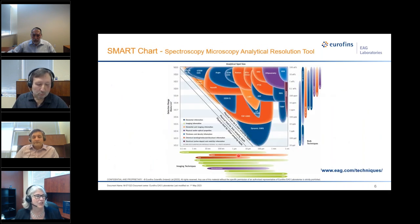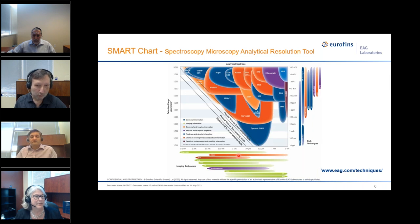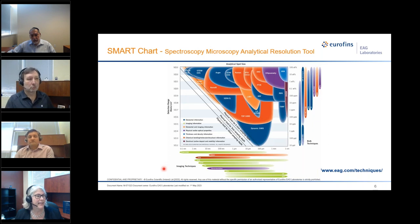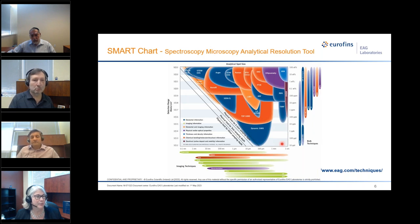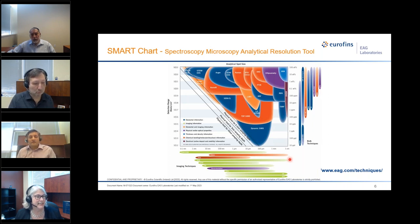SMART is an acronym for Spectroscopy-Microscopy-Analytical Resolution Tool, and it shows the techniques we have at EAG. This chart allows us to compare spot size and detection limit for each technique. The techniques are color-coded: dark blue areas provide elemental information primarily, while green shows imaging information. The x-axis shows spot sizes from 1 cm down to 1 angstrom, and the y-axis shows concentrations from 100% at the top down to 10 parts per trillion at the bottom. You can select your technique based on the detection limit you need and the size of your analysis area.